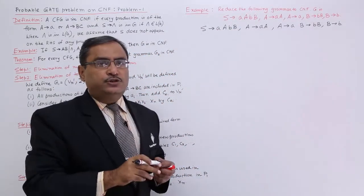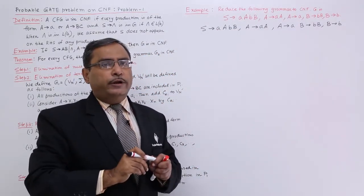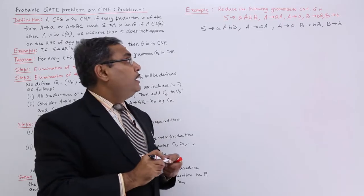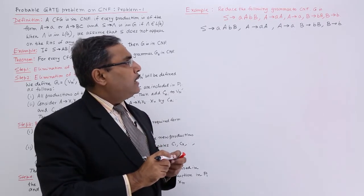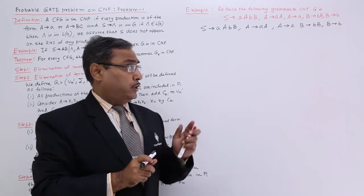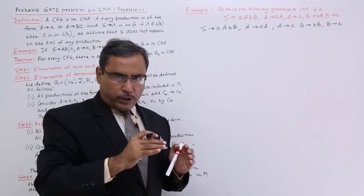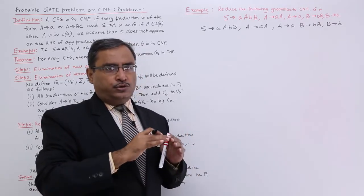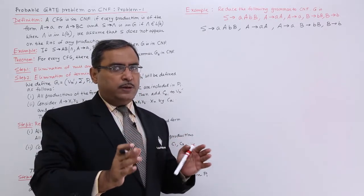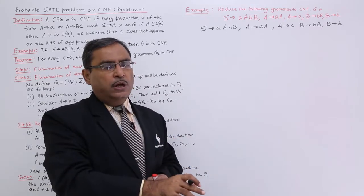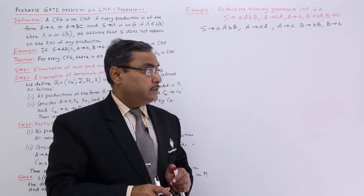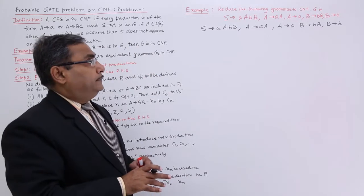The first step is to check whether any null productions or unit productions are present. I am not finding a single unit production or null production here. That means it is null production and unit production free. So step 1 is completed. Otherwise, we would have to execute the respective algorithms to eliminate null and unit productions.